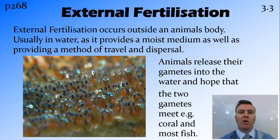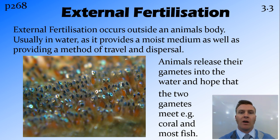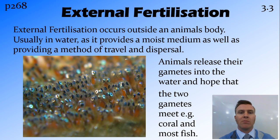The way this works is that animals release their gametes into the water. For example, the male coral will release all the sperm into the water, and the female coral will release all the eggs into the water. These eggs and sperm then join each other in the water, creating a zygote. This occurs in coral, as well as in most fish.